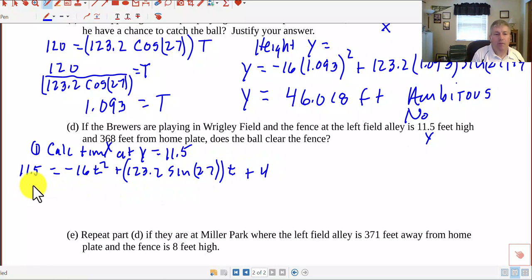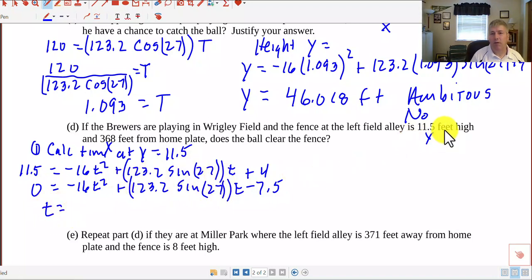11.5 equals negative 16 T squared plus 123.2 sine of 27 times T plus 4. Subtracting 11.5 from both sides, I get 0 equals negative 16 T squared plus 123.2 sine of 27 times T and minus 7.5. So now I can put this in the quadratic formula and solve for T. Now I'm going to get two values for T, but I'm going to want the second value for T or the longer value because it's going to hit this 11.5 feet high once on the way up and then once on the way down, and I want it on the way down, so I want the second value of T.